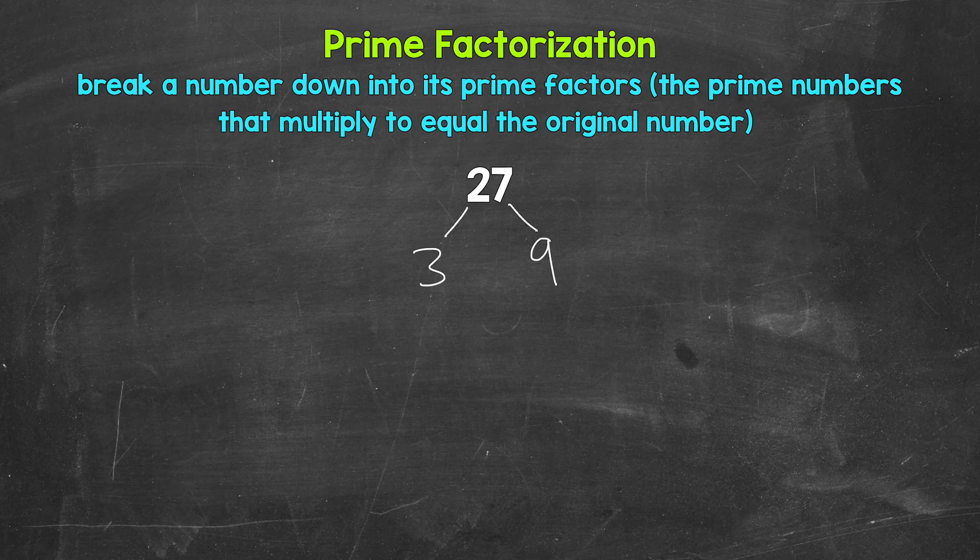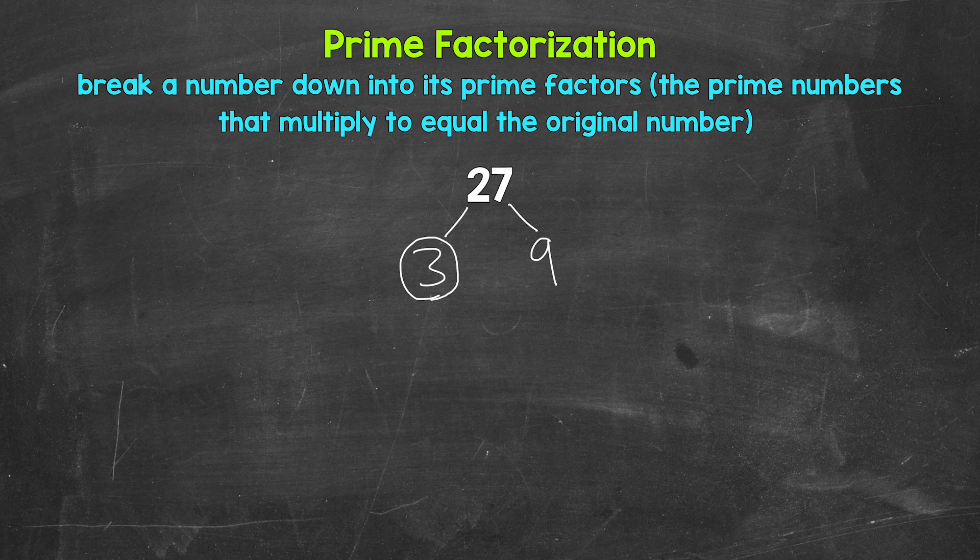We can go from here. We need to continue to break these numbers down. We have three and nine. Three is prime, so we are done over here. I'm going to circle three to show that. Nine on the other hand is a composite number, so we can continue to break nine down.